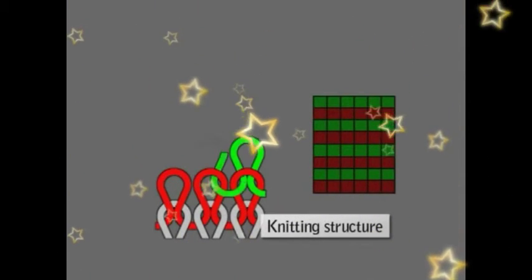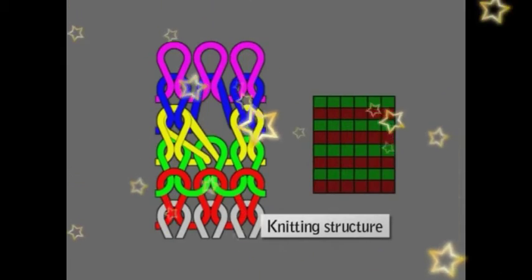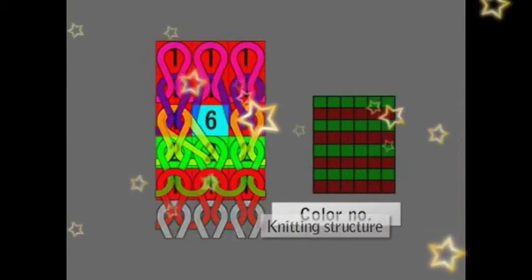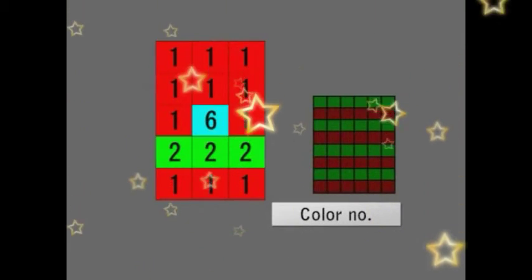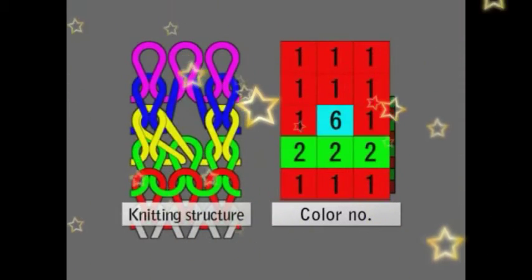First, draw the pattern part. On the pattern part, knitting structures are expressed by using the color numbers. For example, color number one means front stitch, color number two means back stitch, and color number six means front knit one pitch left move.